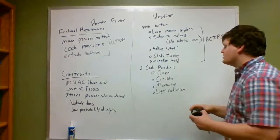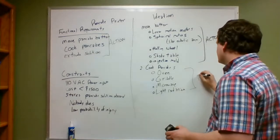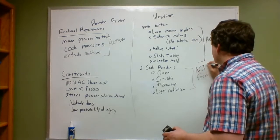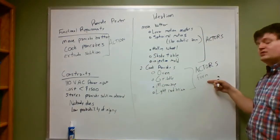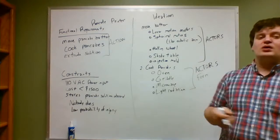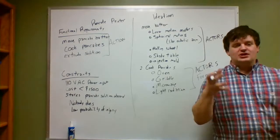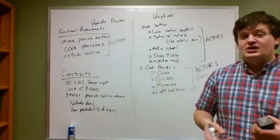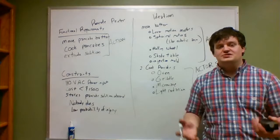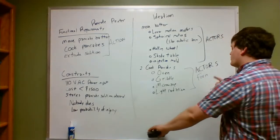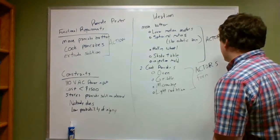Once again, these items — oven, griddle, microwave, light radiation — are actors, they are physical form devices that actively cook pancakes. In the design process, what we call a physical entity is form — what actually physically does something. The components, the nuts and bolts, the washers, the rollers, the pins, the sheet metal creations that comprise the device — that's all the form.